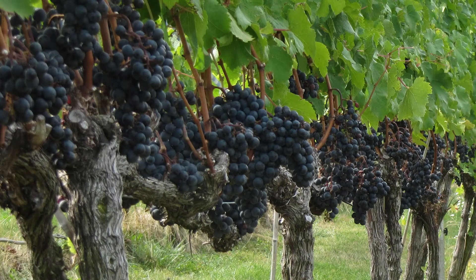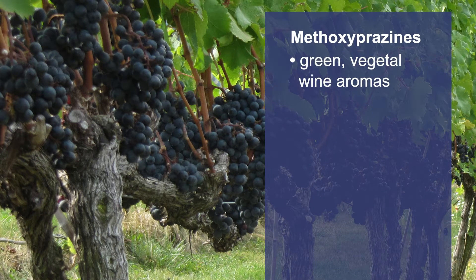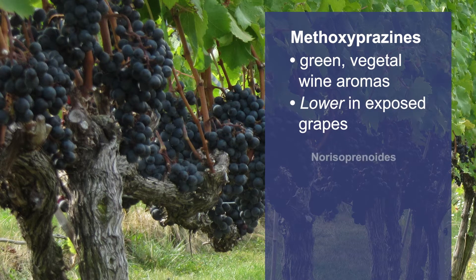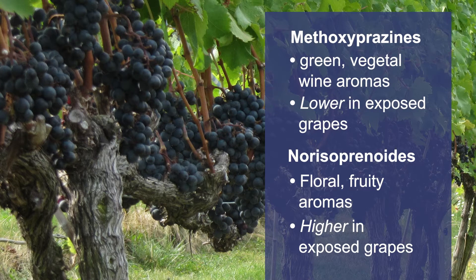Secondary metabolites that impart varietal character are typically increased in grapes exposed to higher sunlight and temperatures. For example, methoxypyrazines, a compound class that produces green, vegetal wine aromas, tend to be lower in exposed grapes, while norisoprenoids, a compound class that often produces floral and fruity wine aromas, are typically higher in sun-exposed grapes. Note that responses will depend on cultivar, vintage, and the magnitude of fruit exposure.